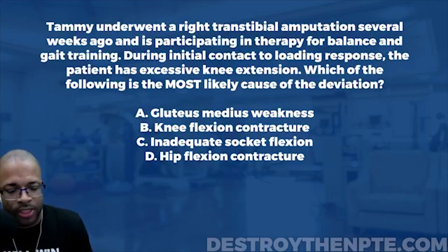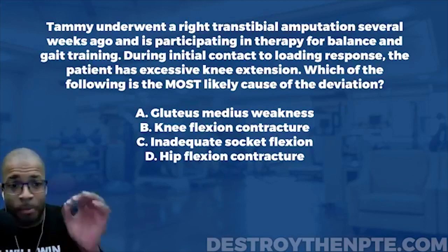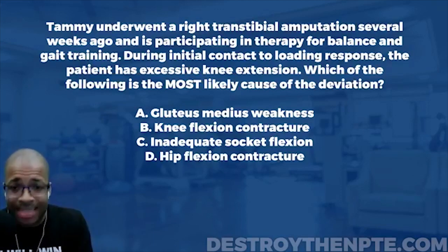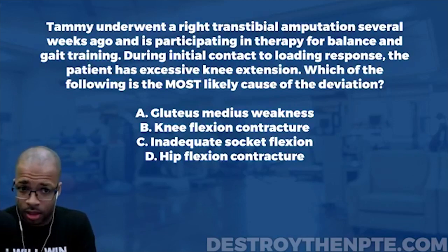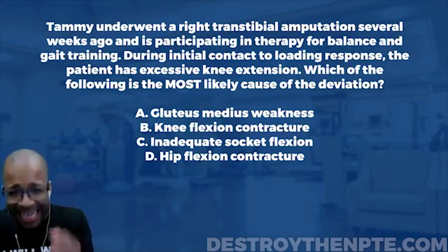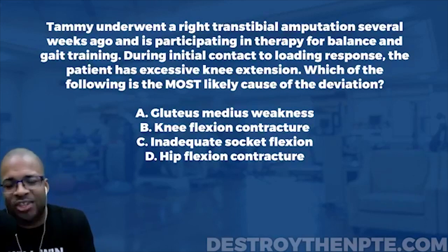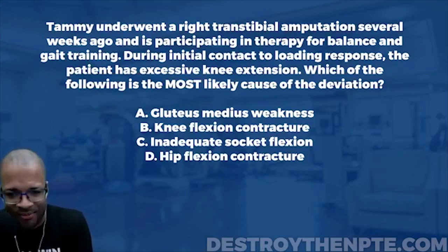For this week's challenge Wednesday, we have our patient Tammy. Tammy underwent a right transtibial amputation several weeks ago and is participating in therapy for balance and gait training. During initial contact to loading response, the patient has excessive knee extension. Which of the following is the most likely cause? A: gluteus medius weakness, B: knee flexion contracture, C: inadequate socket flexion, D: hip flexion contracture. Go ahead and lock in those answers.